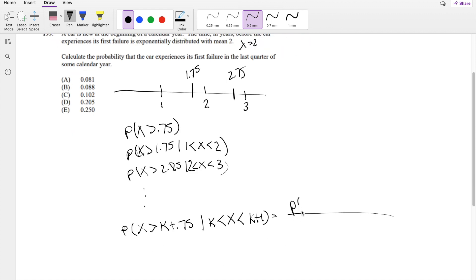So this one we can say is the probability, by a conditional probability formula, we can say this is the intersection of x is greater than k plus 0.75, and when x is between k and some k plus 1, divided by the probability of x less than, x is bigger than some k, but it's less than some k plus 1.